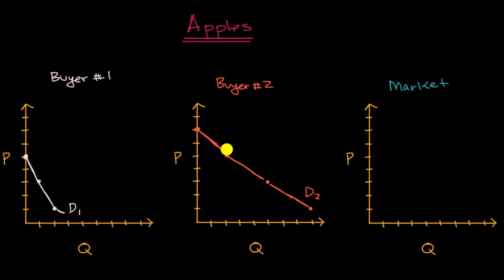This is the demand curve for buyer one, and this is the demand curve for buyer two. And so if the vertical axis is price, and maybe this is price per pound of apples, and quantity, let's just say that's pounds per time period, maybe pounds per week.